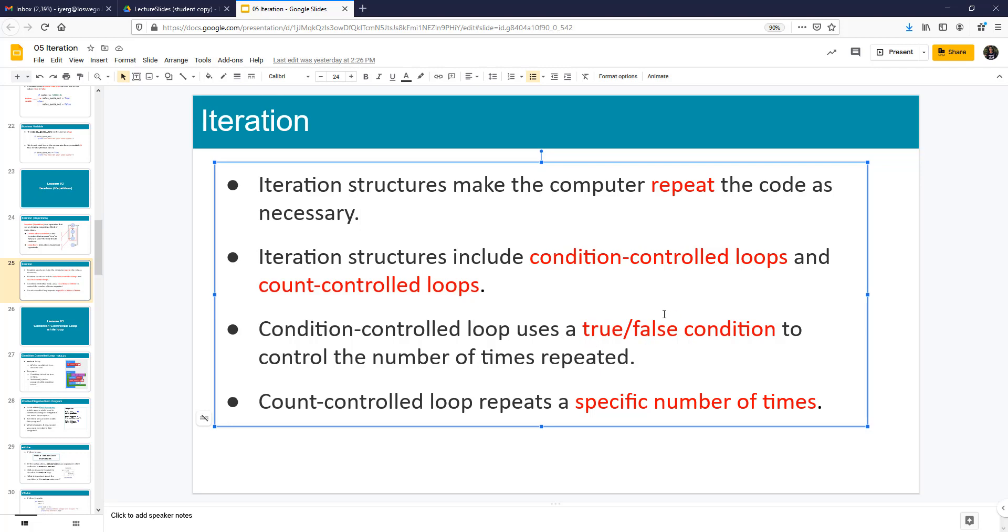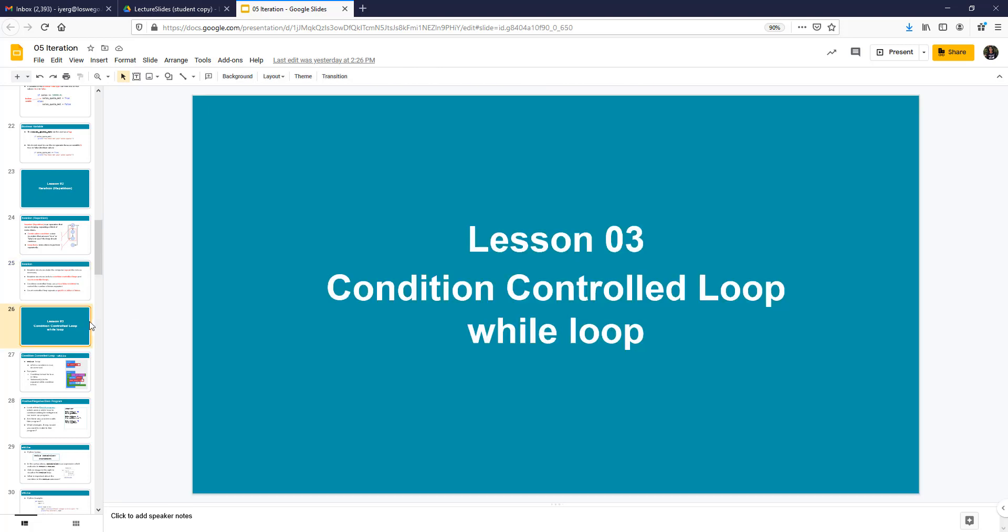So condition control loop uses a true or false condition. Count control loop repeats a specific number of times. How many times do we want the loop to iterate? So in the next lesson, you are going to learn about condition control loops and then about count control loops. So I'll see you there.